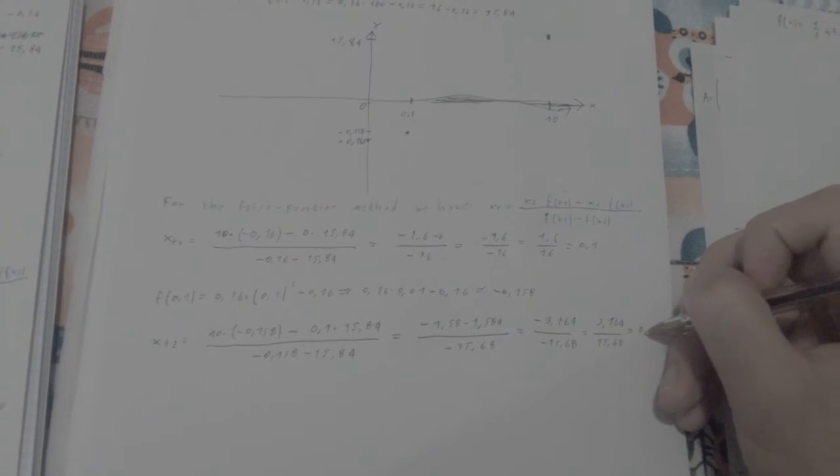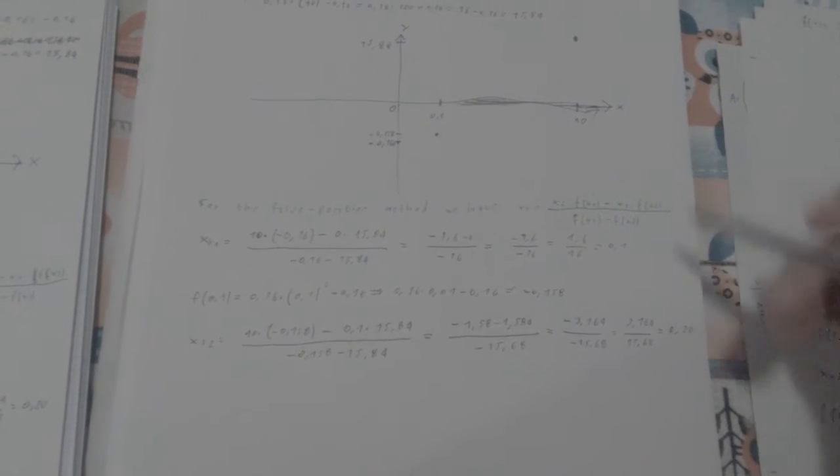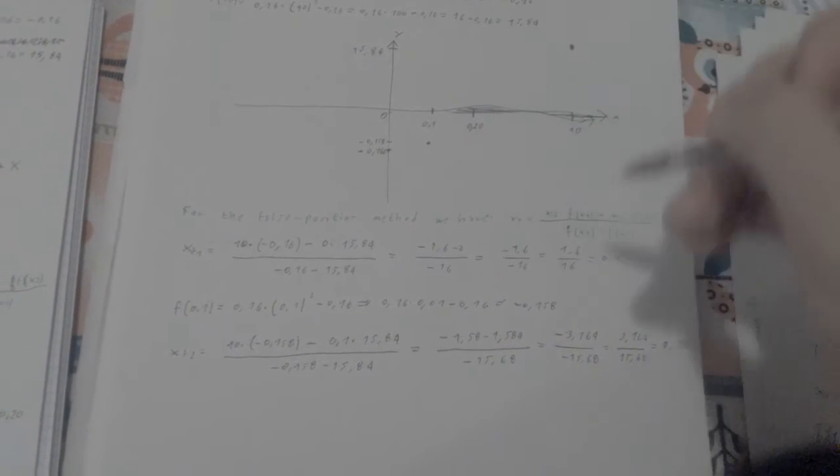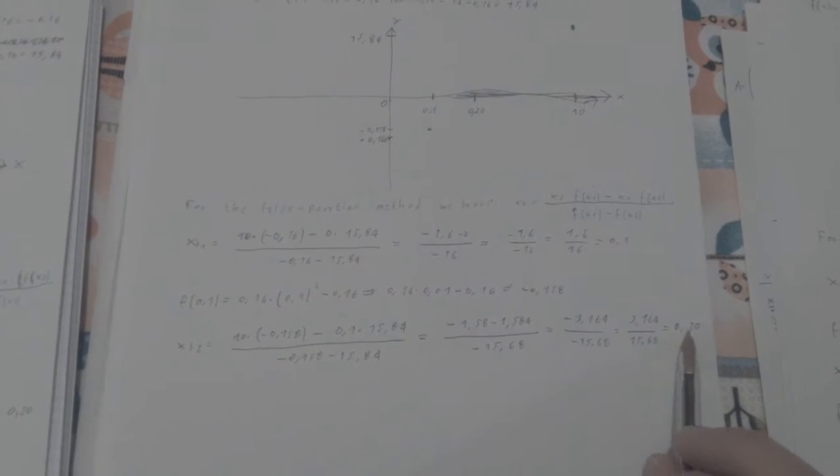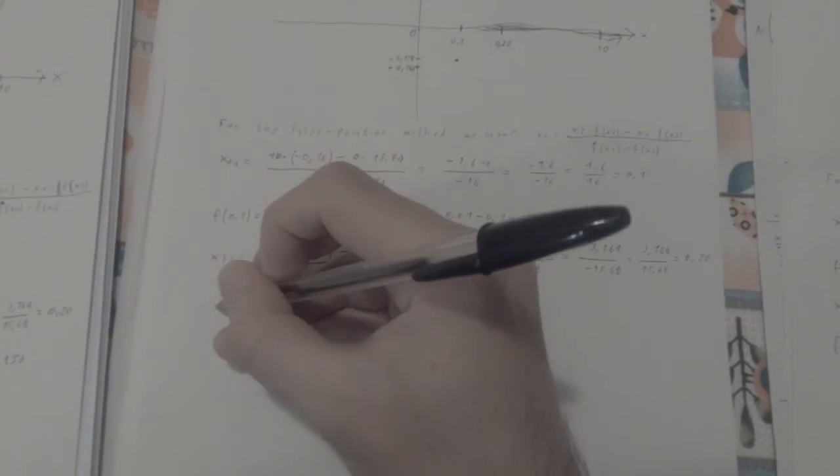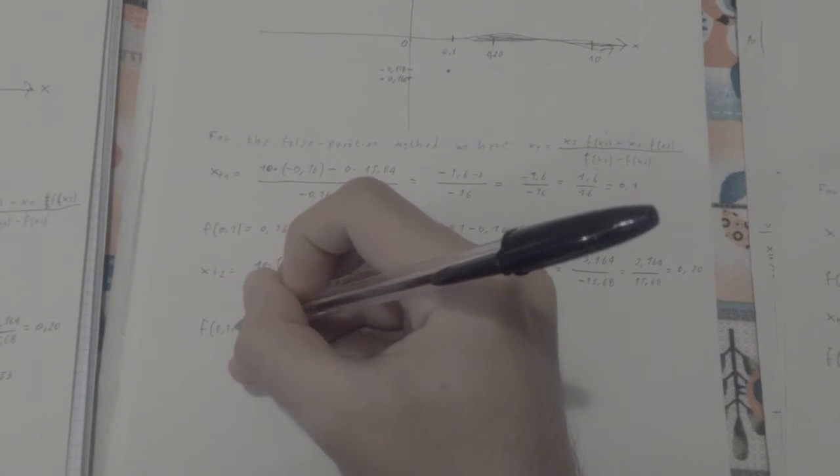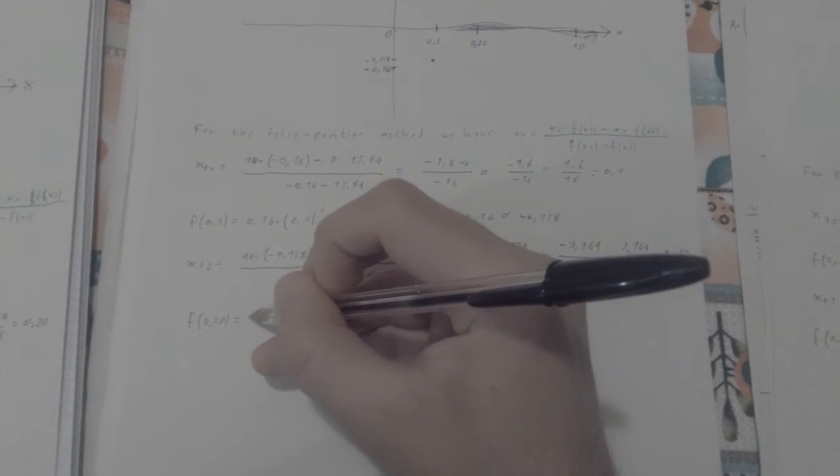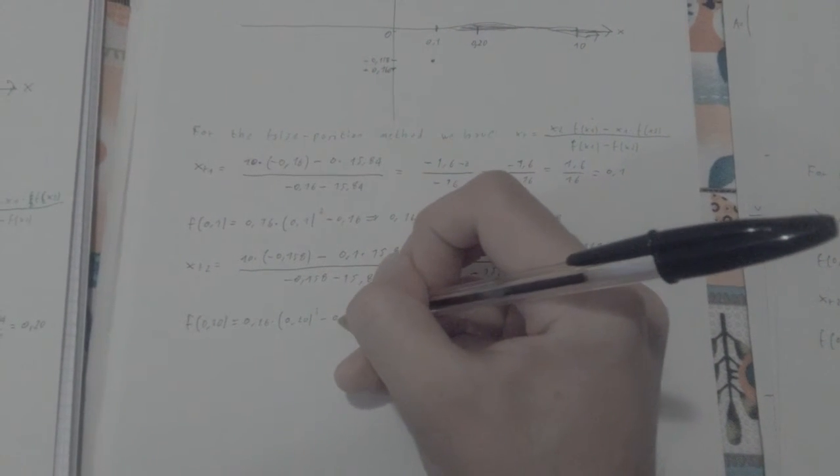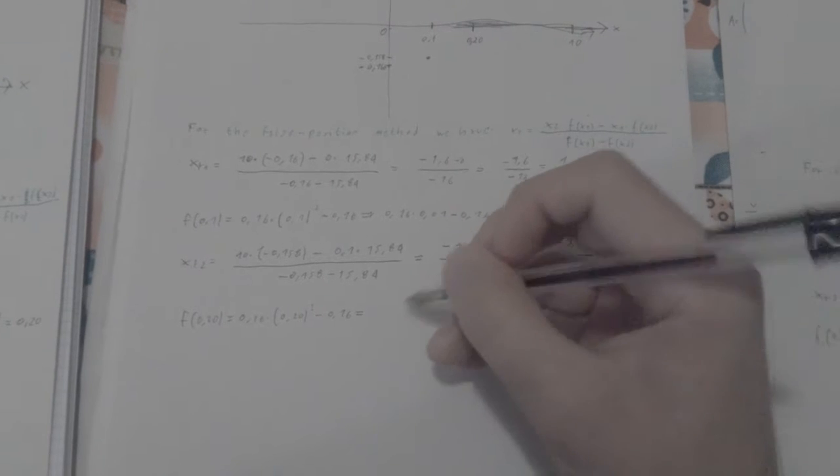So we just found 0.20, and now we're going to plug 0.20 back into our function. So if we do that and plug 0.20 into our function, we get 0.16 times 0.20 squared minus 0.16.